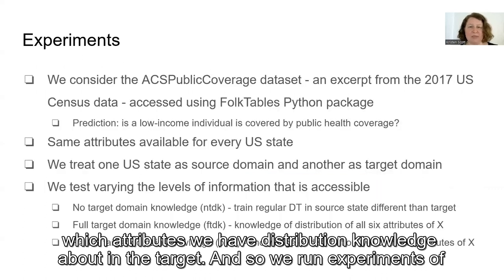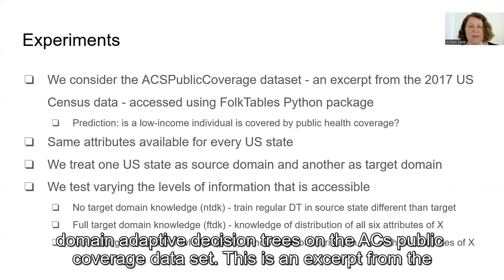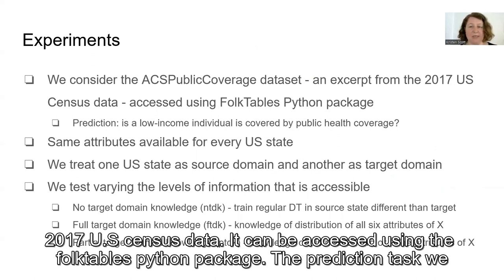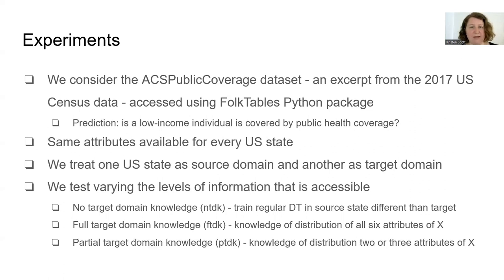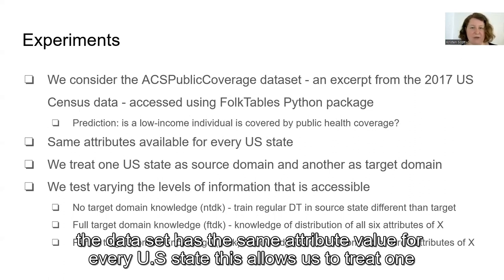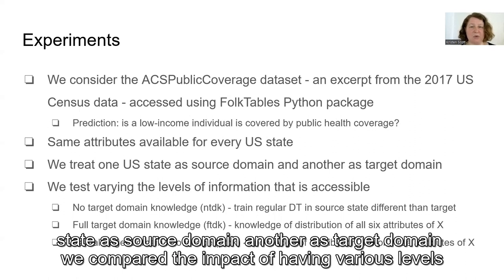We run experiments of domain adaptive decision trees on the ACS public coverage dataset. This is an excerpt from the 2017 US Census data, accessible using the folktables Python package. The prediction task was to determine whether a given low-income individual is covered by public health coverage. The dataset has the same attribute values for every US state, which allows us to treat one state as the source domain and another as the target domain.